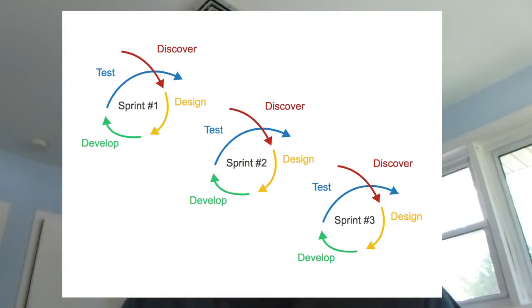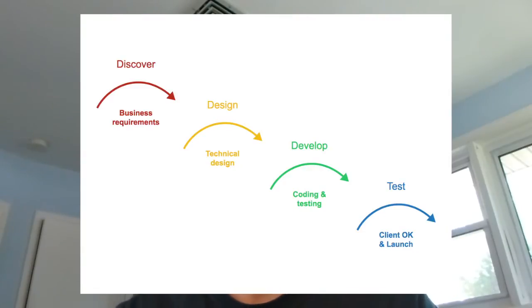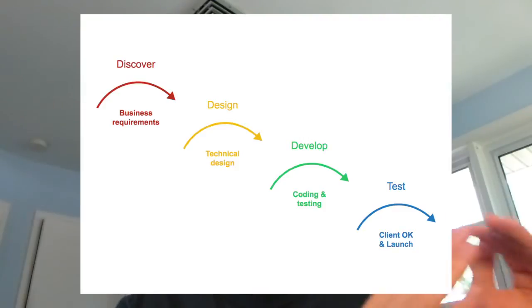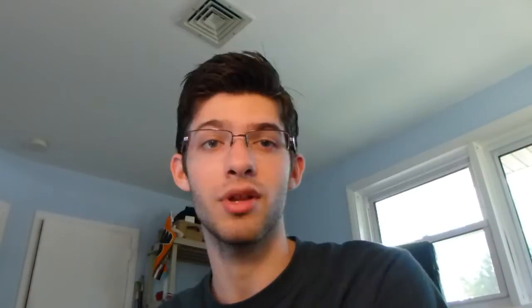Agile development is very attractive to big companies and even small companies and startups because it's very social, whereas in the other more traditional waterfall practice or method, it's not as social. You can see by these two diagrams — in agile development, the designer and the developer and the entire team really work together throughout the entire project. Whereas in the waterfall method, the designer will have their turn and then once they're done, they'll pass it along to the developer and so on and so forth. Each person really works individually with a very limited amount of social interaction between each step and each stage.